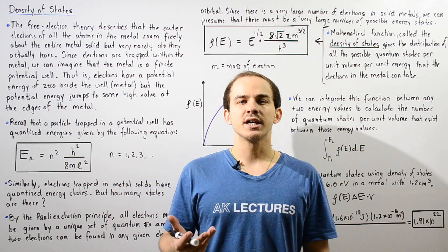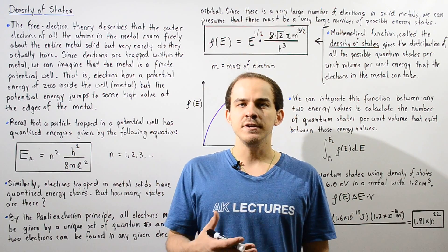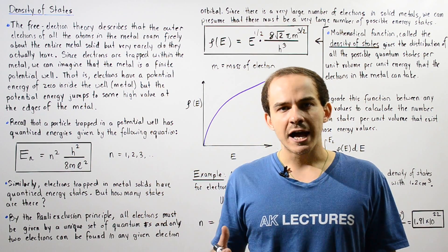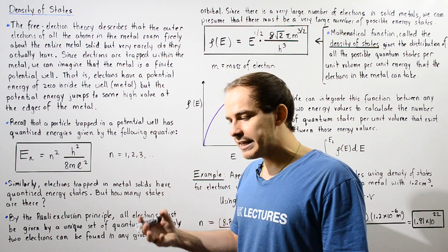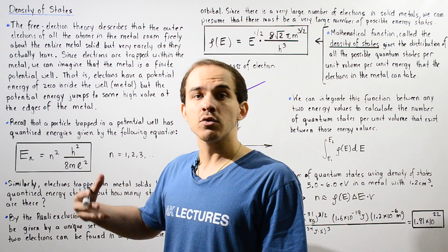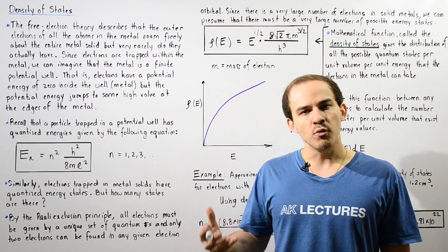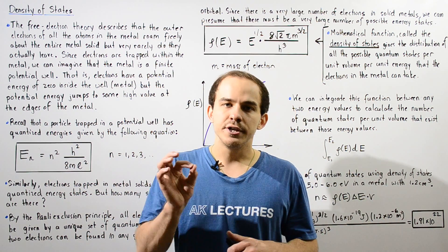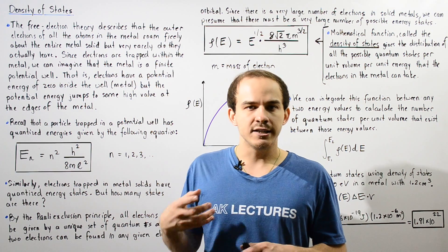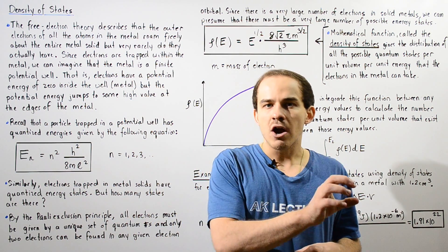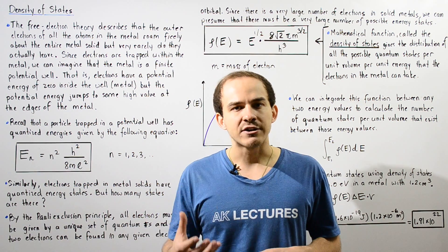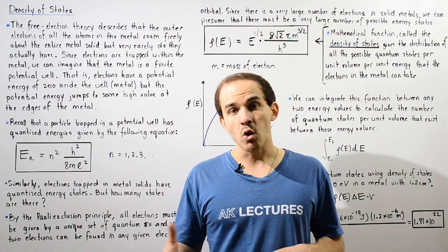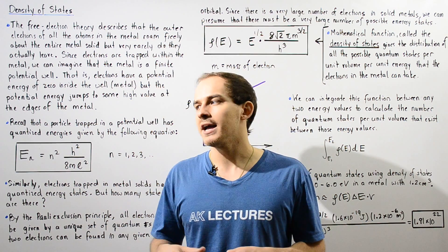In the previous lecture, we discussed metallic bonds and the free electron theory of metals. That theory describes that electrons within any given metal solid — the outer electrons of the atoms — are able to move freely about that entire solid, because the nuclei of individual metal atoms hold the outer electrons by very weak electric forces, allowing them to roam freely throughout the entire solid metal.